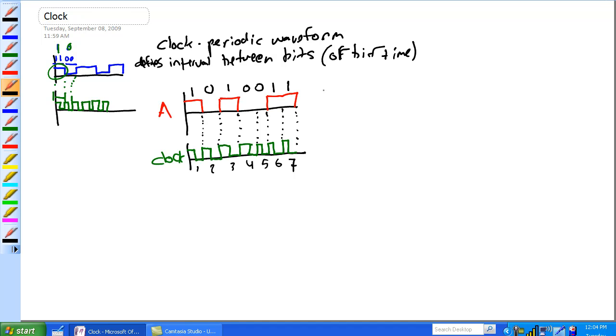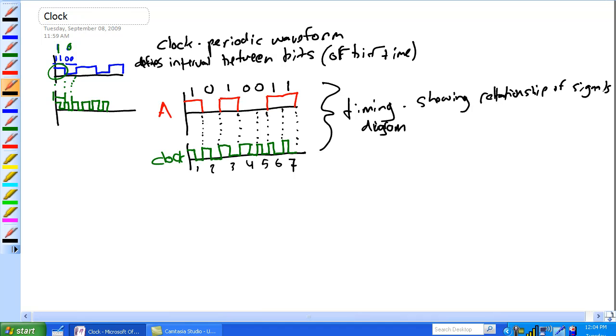So a timing diagram is exactly this. Basically, it's showing the relationship of signals at various times. Because you can have a bunch of signals here.